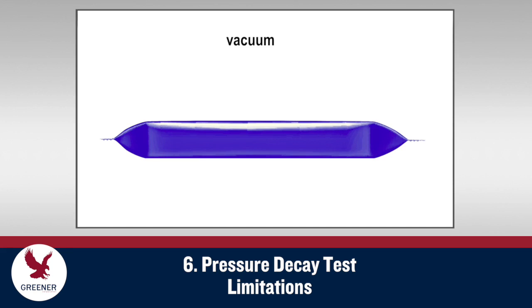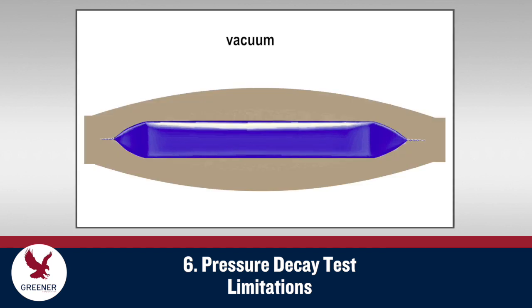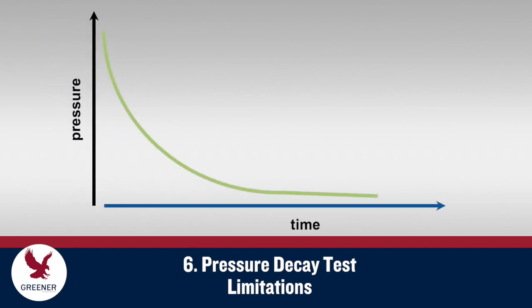With older pressure decay testing devices, the pressurized package will expand in volume. Excessive pressurization may result in seal creep or stretching and skew results, which limits the maximum seal test pressure, especially as package size increases. The newest devices resolve these issues by restraining the package in a flexible bladder that prevents the pressurized package from expanding, allowing much higher pressures to be used. Since the natural pressure decay rate decreases as pressure decreases, as illustrated on this graph, results from this test method are more precise for smaller leaks and lose accuracy as leak sizes increase.